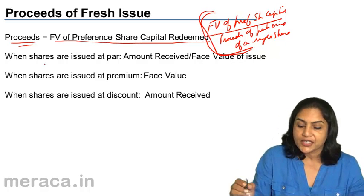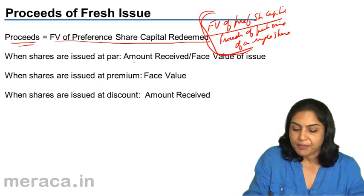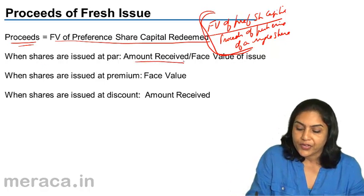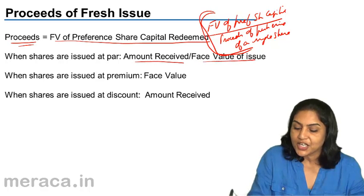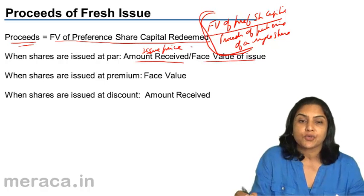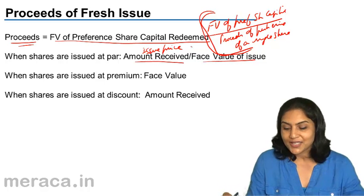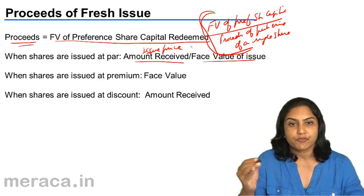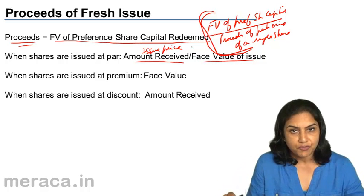When the shares are issued at par, the amount received — that is the issue price — and the face value are both the same. Therefore, there is no confusion.